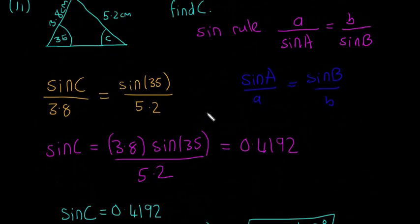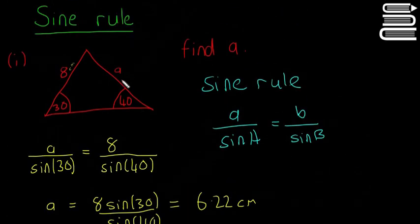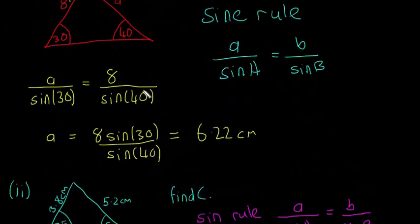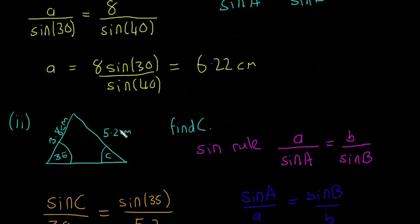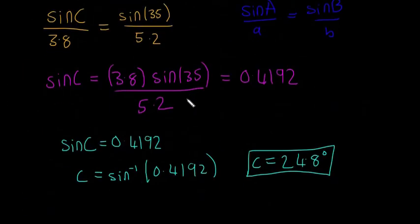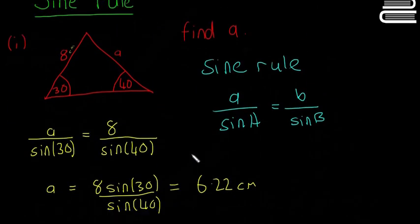There you go. So there are the two kind of main reasons you're going to use the sine rule, is to either find one of the sides or to find one of the angles. So again, I hope that helped. And then we're going to look at the ambiguous case in the next video.